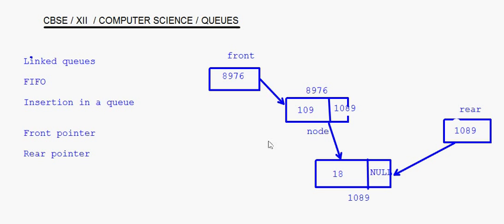Once the first node is inserted, the address of front will remain the same. Whenever you insert nodes, it's only the address of rear that will get changed. The key thing to keep in mind while doing insertion in a linked queue is that it's only this rear pointer which has to be modified with each insertion, and the previous node gets the address of the new node that was inserted. Let's first look at the algorithm for insertion and then we can derive the coding.